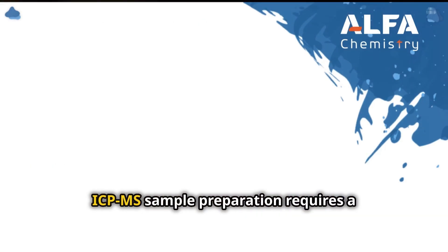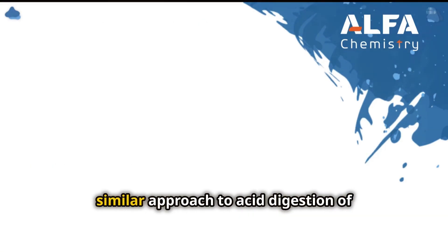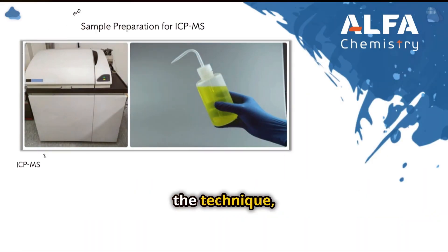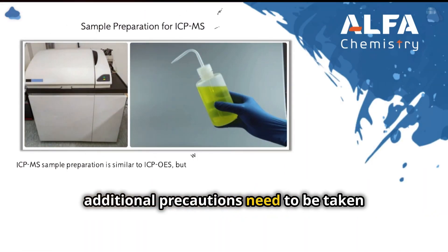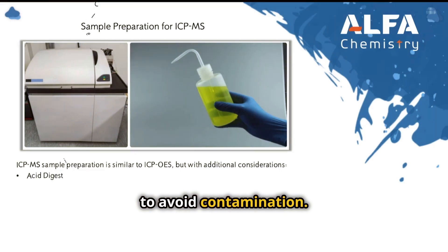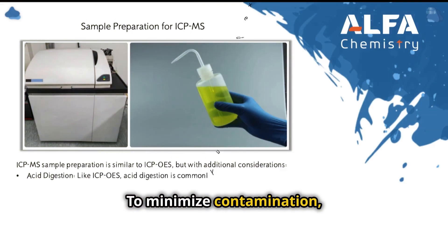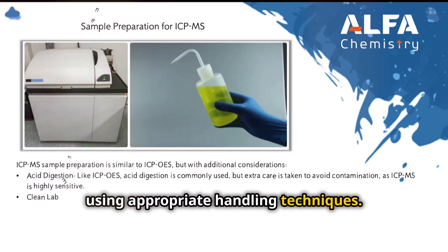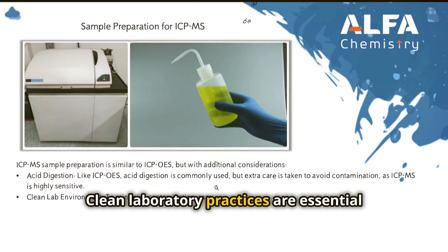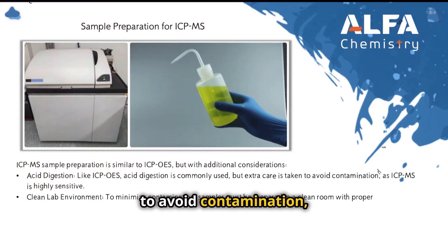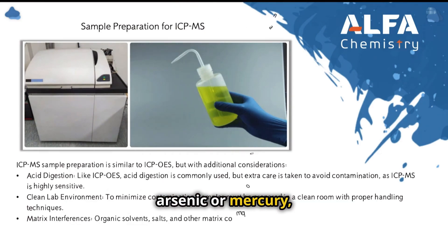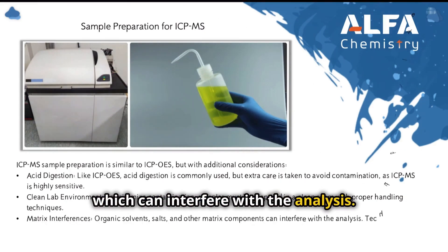ICP-MS sample preparation requires a similar approach to acid digestion of solid samples, but due to the ultra-sensitive nature of the technique, additional precautions need to be taken to avoid contamination. To minimize contamination, samples must be prepared in a clean room using appropriate handling techniques. Clean laboratory practices are essential to avoid contamination, especially from trace elements such as lead, arsenic, or mercury, which can interfere with the analysis.